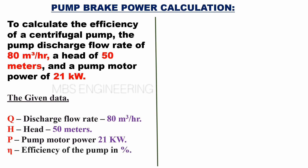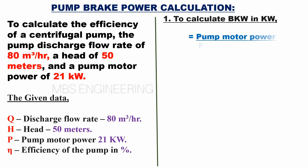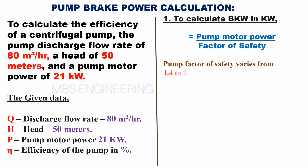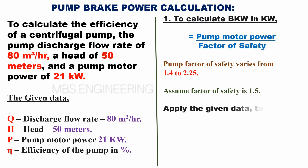We will calculate brake kilowatt in kilowatts. Brake kilowatt equals pump motor power divided by factor of safety. The pump factor of safety varies from 1.4 to 2.25 — assume the factor of safety is 1.5. Applying the given data: BKW equals 21 divided by 1.5. Therefore, the obtained brake kilowatts is 14 kilowatts.